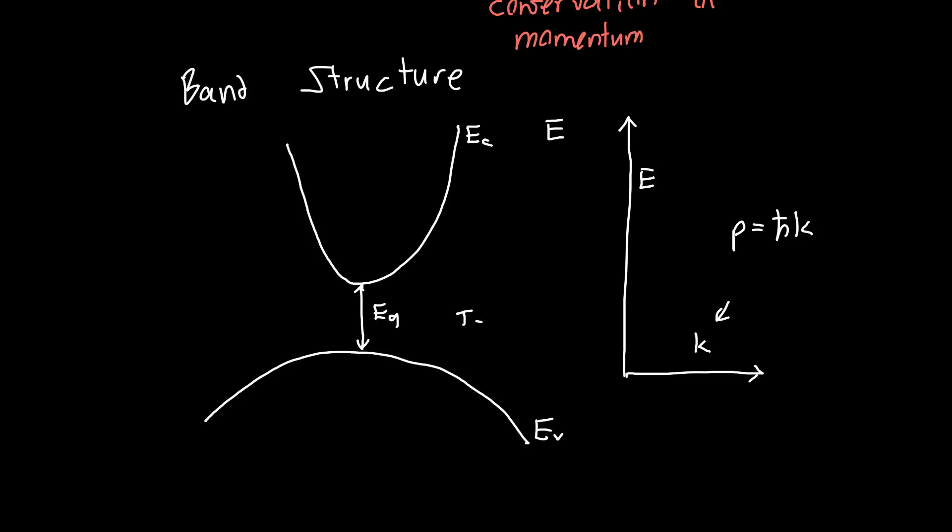And let's say we're at T equals zero Kelvin, so all of our electrons are in the valence band and we don't have any electrons in the conduction band - that just makes our lives easier. And now we've got an incoming photon and let's say similarly that this band gap was maybe 1.5 electron volts.